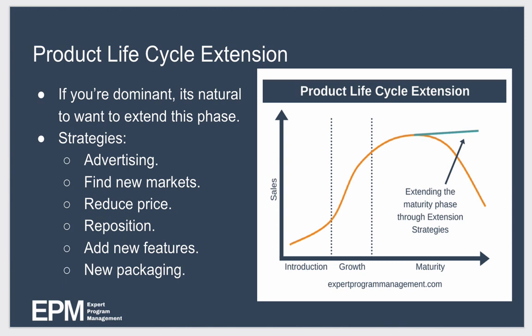Strategies to extend the product lifecycle include: advertising to find a new audience or reactivate interest from a previous audience; finding new markets; reducing the price to make the product attractive to new people; repositioning the product — for example, a sugary sweet could be rebranded as a sports energy capsule; and adding new features to stay ahead of the competition and attract new customers. For example, Apple didn't stop developing the iPhone after releasing the first version — they keep releasing new versions to try and extend the maturity phase of the iPhone forever.